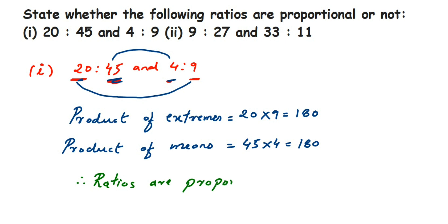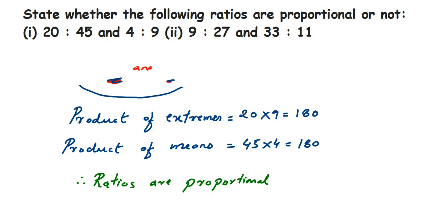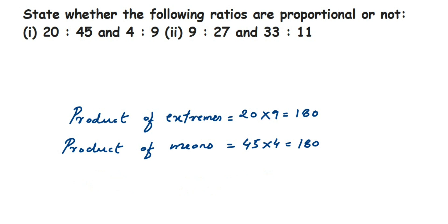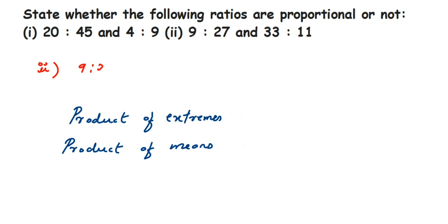That was the first question. For the second question, you can try the easy method — reduce the numbers to the lowest form and check. I'm going to show you using the product of means and extremes. We have to check if the ratios are proportional or not.